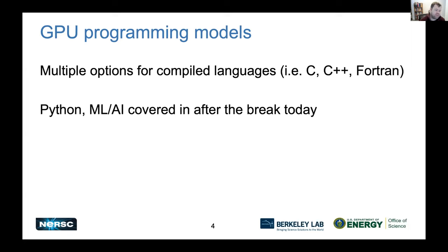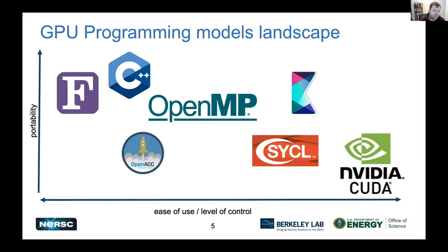As for what's in this talk today, there are many options for compiled languages — C, C++, and Fortran — that we're going to cover. Later today we'll hear about Python and machine learning and AI frameworks. I chose two axes to slice the landscape across: on the horizontal axis we have ease of use or level of control, which is also a proxy for number of features.